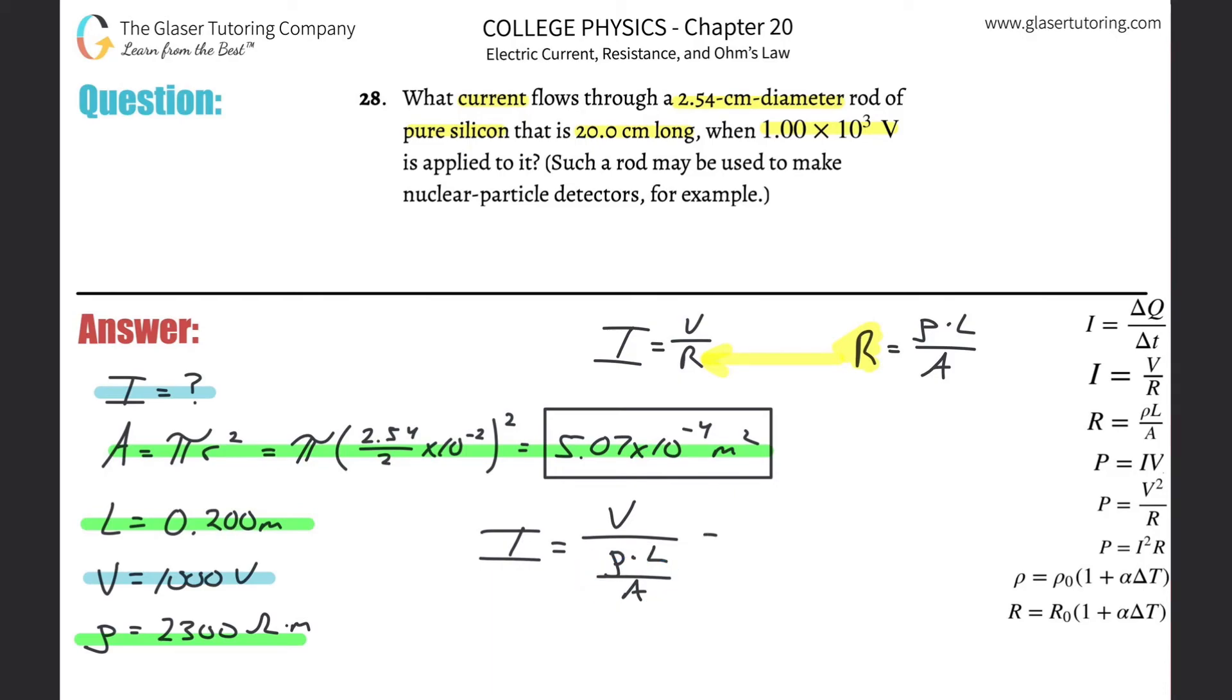So we're going to have current is going to be equal to the voltage divided by then the resistivity of the silicon multiplied by the length divided by the cross-sectional area. And that's it. All we have to now do is plug this in. So there's going to be 1,000 all over the resistivity, which we said is 2,300.